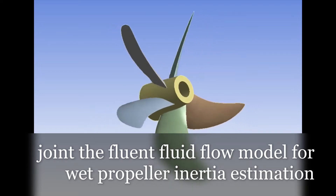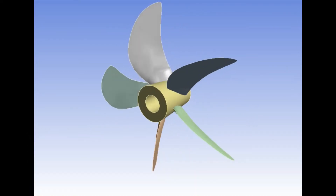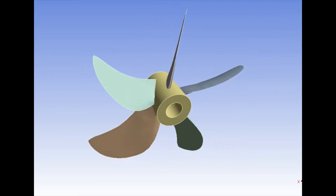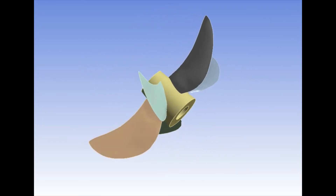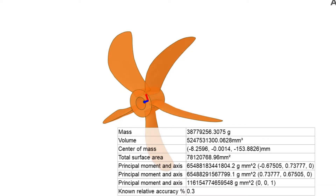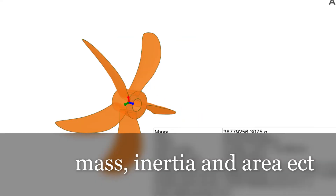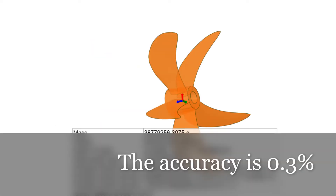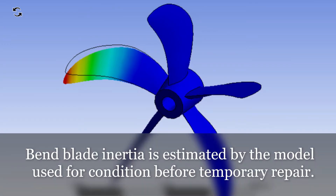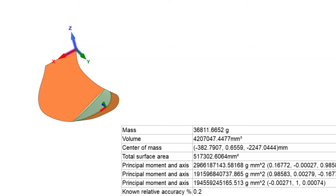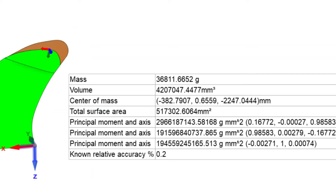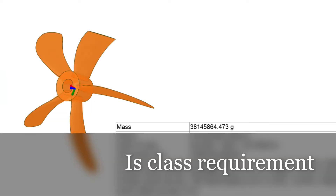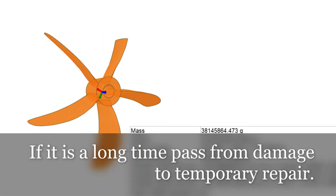The Fluent fluid-flow model is joined for wet propeller inertia estimation under fluid conditions before temporary repair. This is a class requirement, particularly when a long time has passed from the point of damage to the temporary repair.